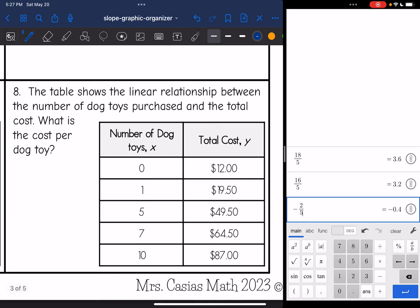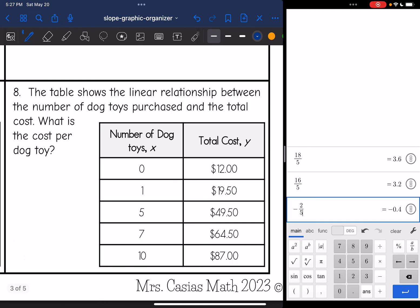Next one says the table shows the linear relationship between the number of dog toys purchased and the total cost. What is the cost per dog toy? So we can use any two points. I'm actually going to choose to use the first one and the last point this time, because those are the only two that I see that have whole numbers. You could have used this, but I'm just choosing not to use it since it has the 0.5. Now I have my points picked out.